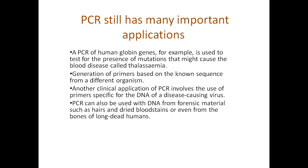PCR still has many important applications. For example, globin genes in humans — whose sequence is known — can be amplified with PCR and tested for the presence of mutations that might cause the disease called thalassemia. Another application: if the sequence of a gene from a mouse is known, we can design equivalent primers for the corresponding gene in humans and amplify it using PCR. This demonstrates the use of primers based on known sequence from a different organism.